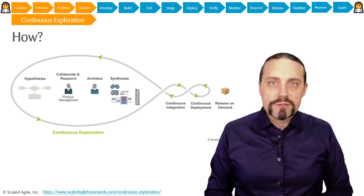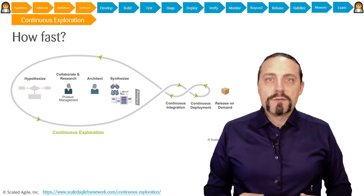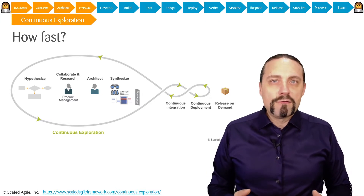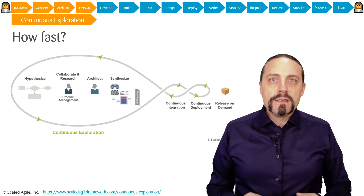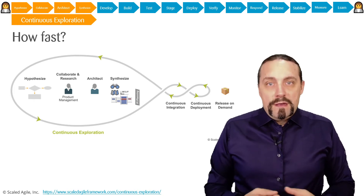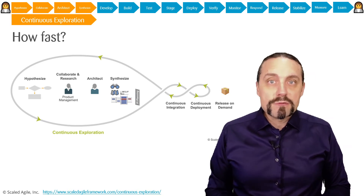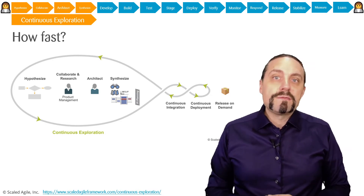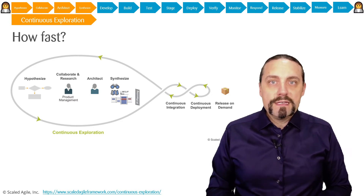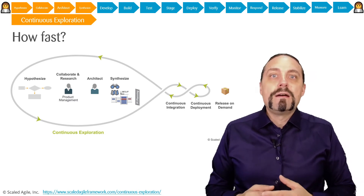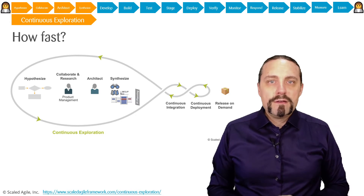Now we can go into continuous integration with a clear vision, roadmap, and a set of features. One of the things I usually get asked is: how fast is this process? How long does it take to go through continuous exploration? The answer is quite simple — it depends. Some items may go through continuous exploration within hours. Some items will take days, and some items will take weeks. But what would be wrong is if continuous exploration takes months or even years — that would be wrong.